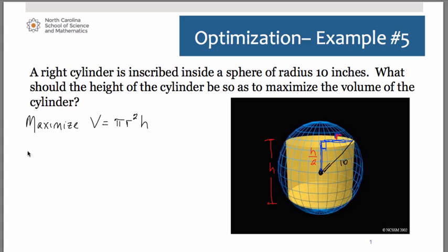We know that by the Pythagorean theorem, r squared plus (h over 2) squared will give us 10 squared. Let's simplify that a little bit. Notice we have an r squared here and an r squared there. Why don't we just solve for r squared and we can substitute directly into that primary equation. Just makes things a little bit easier.